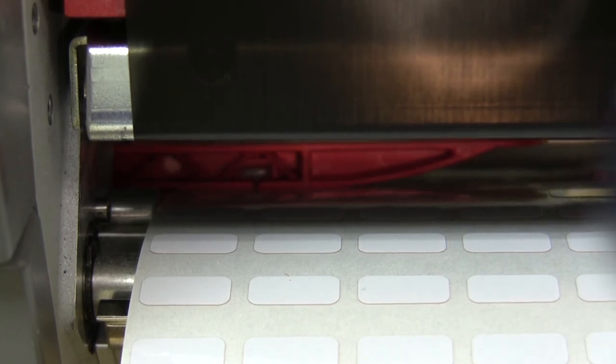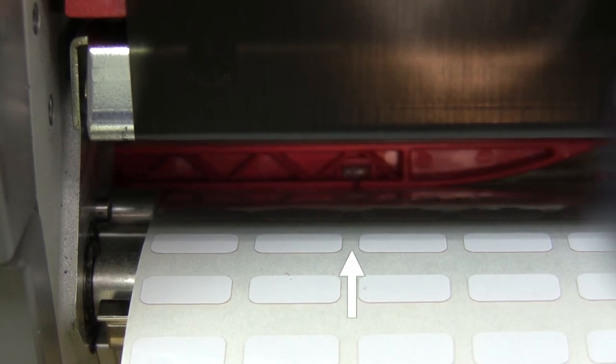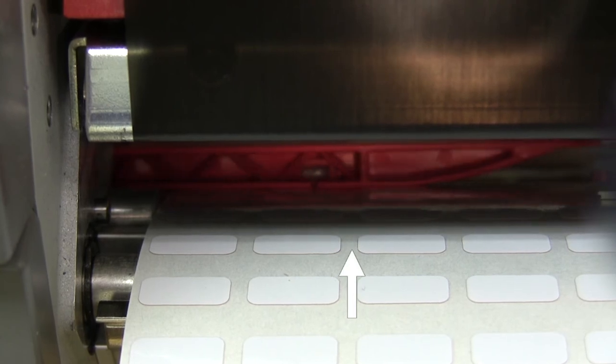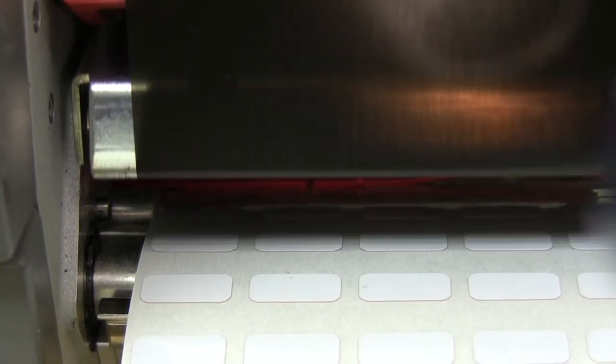What we don't want is to have the sensor positioned in a gap in between the labels as shown here. The printer will not be able to sense correctly. Once the sensor is in position we can lock the head down and we'll be ready to print.